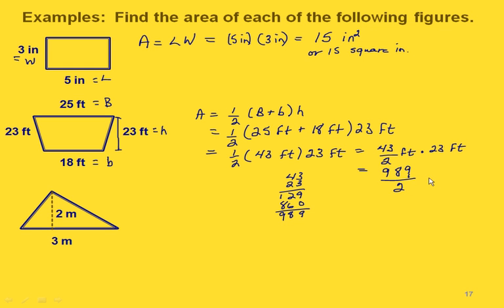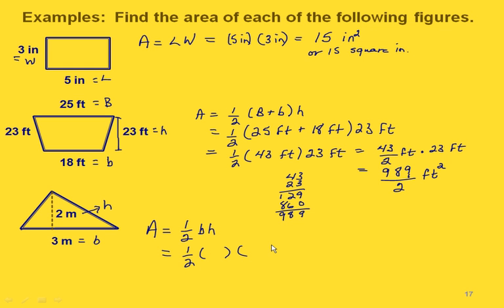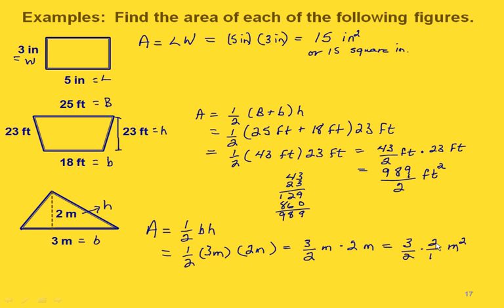Continuing the trapezoid calculation: one half times 43 feet gives us 43 halves feet, and then times 23 feet. Multiplying 43 times 23 gives us 989, and dividing by two gives us 989 over 2 square feet. Now for a triangle with a base of three meters and a height of two meters: area equals one half times three times two. One half times three is three halves, and three halves times two equals three. So we end up with an answer of three square meters.